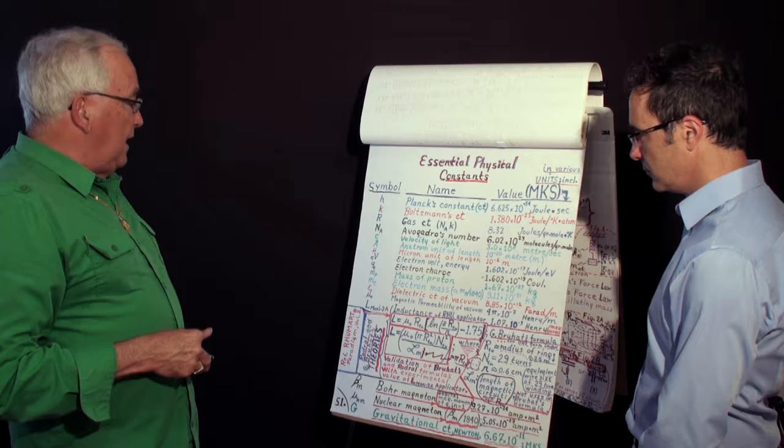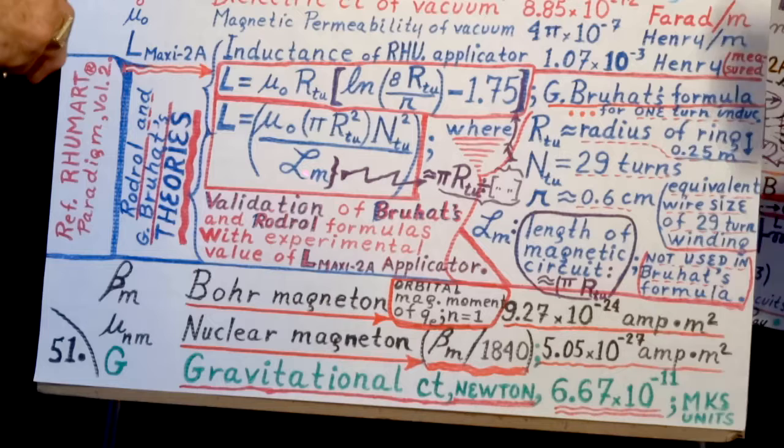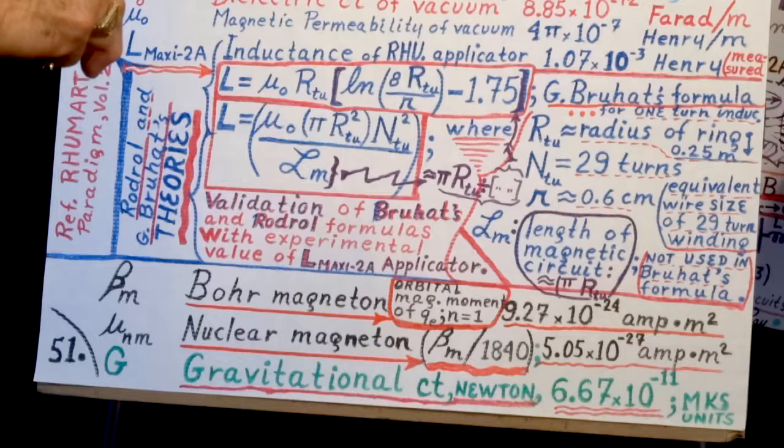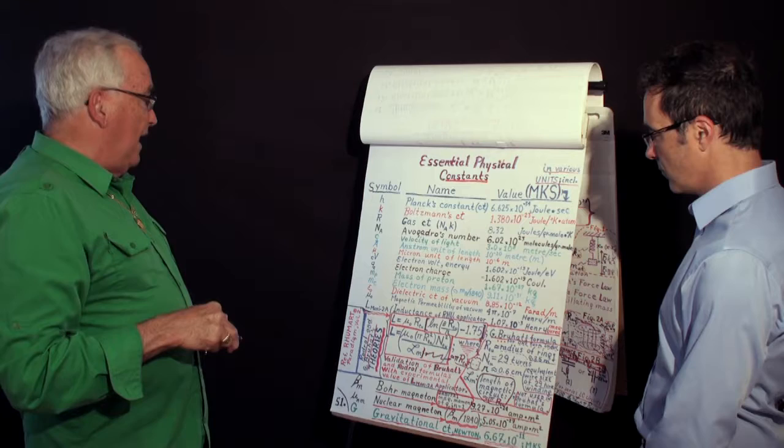If you take the formula that I showed you, that we used to calculate when there are many turns, in this case you place N equal one, and length of magnetic circuit like this, you end up that L will be equal to mu zero times radius multiplied by this factor.